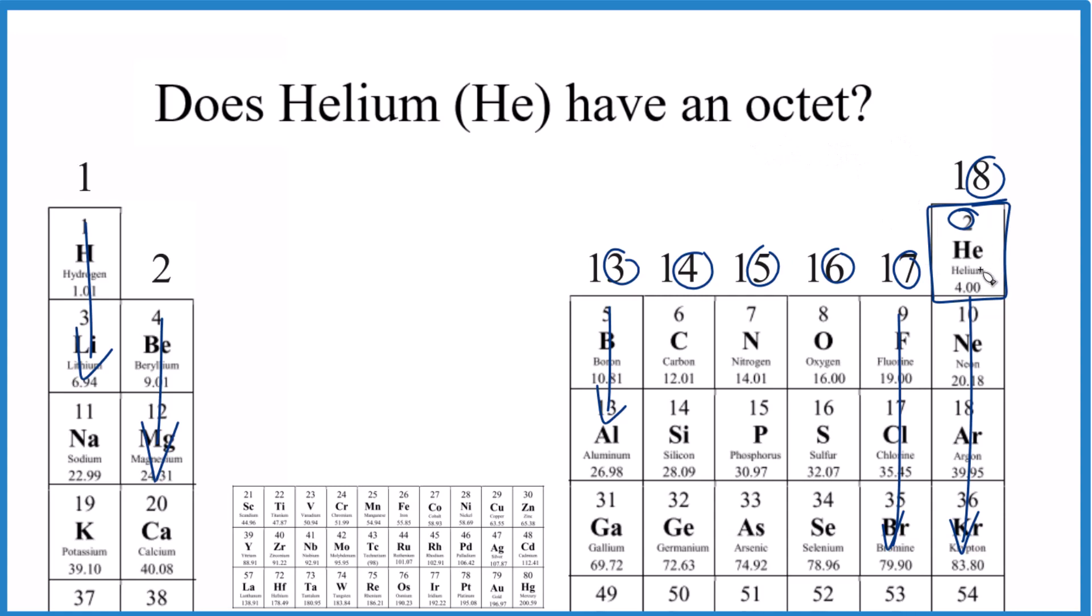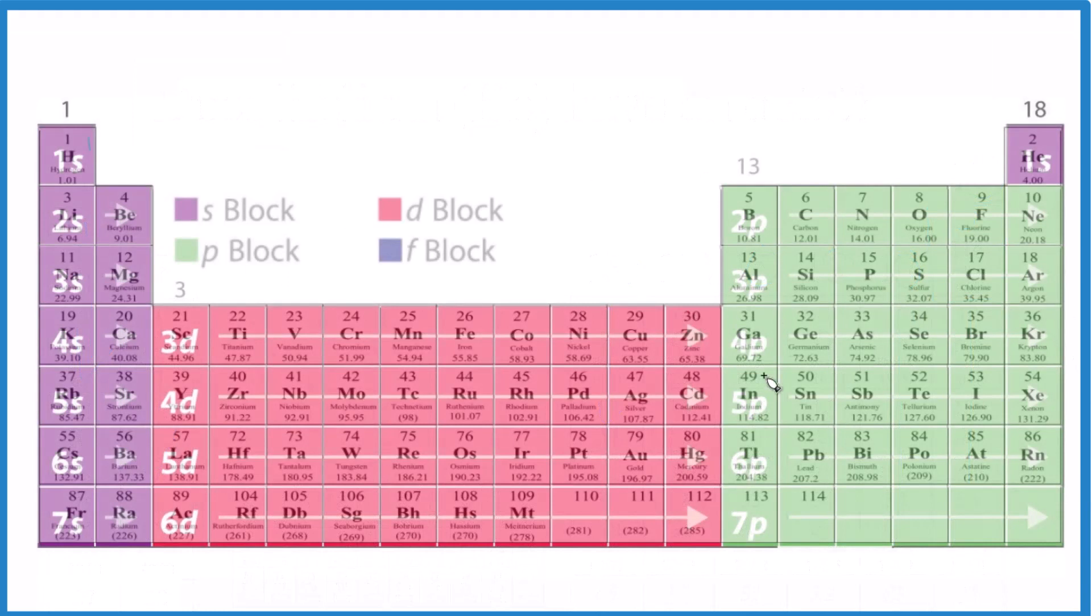But helium's a noble gas, it's inert, it doesn't react. Let's take a look at that a little deeper. Here's the periodic table divided up into what we call orbital blocks: the s block, d block, p block, and here's helium right here. Atomic number 2, helium.